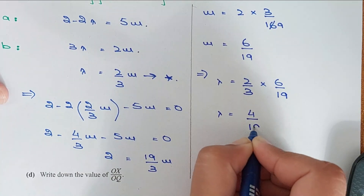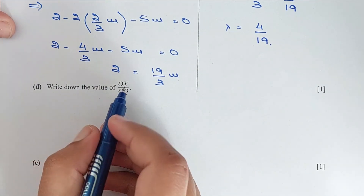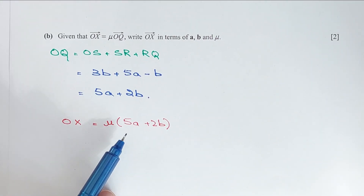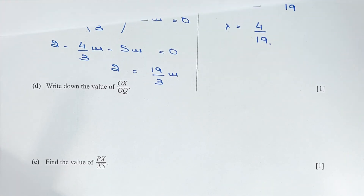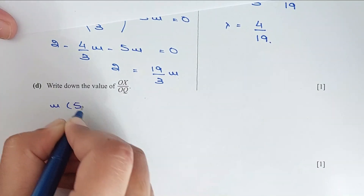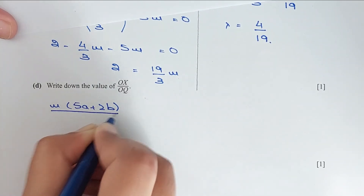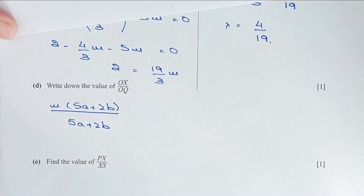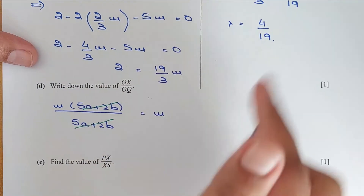Part d: find OX/OQ. From part b, OX equals μ times (5a plus 2b) and OQ equals (5a plus 2b). Cancelling like factors, OX/OQ equals μ equals 6/19.